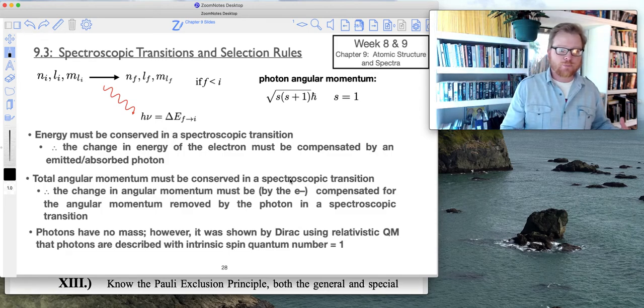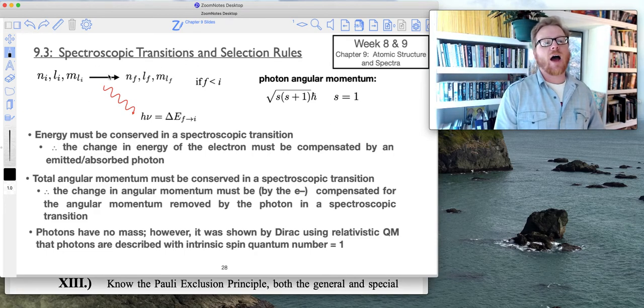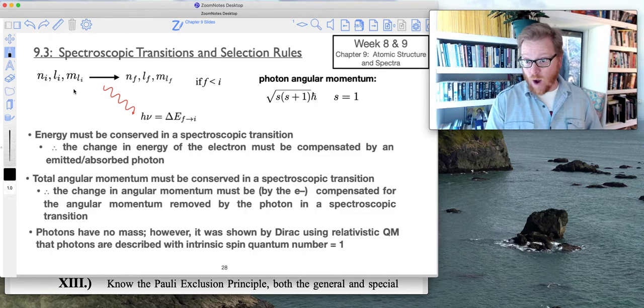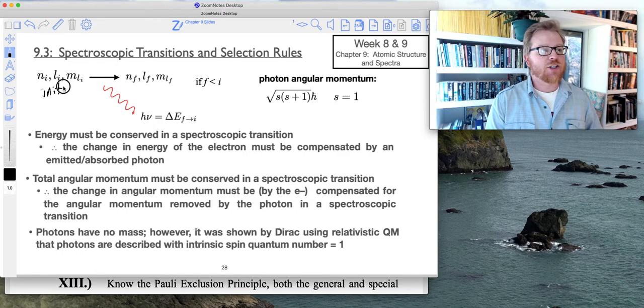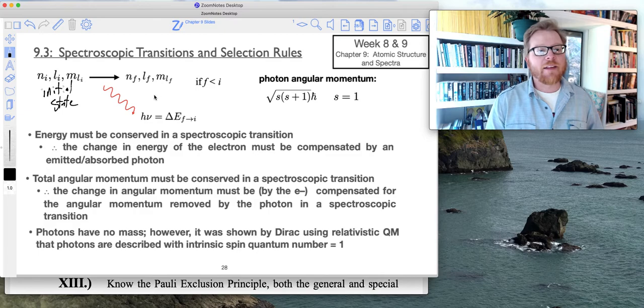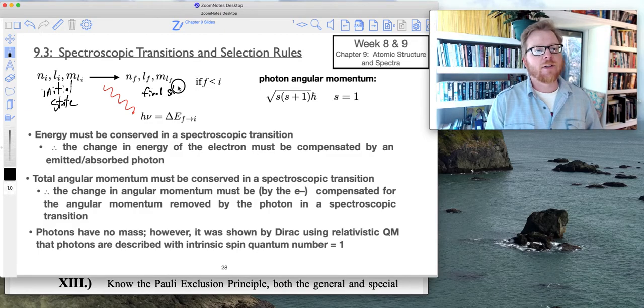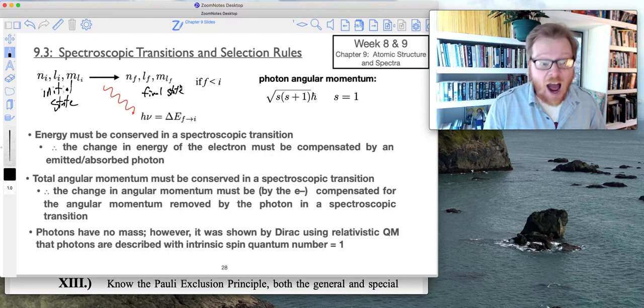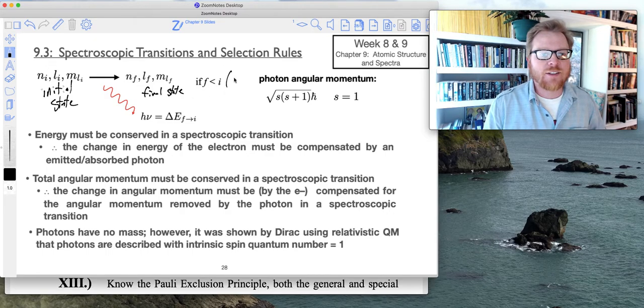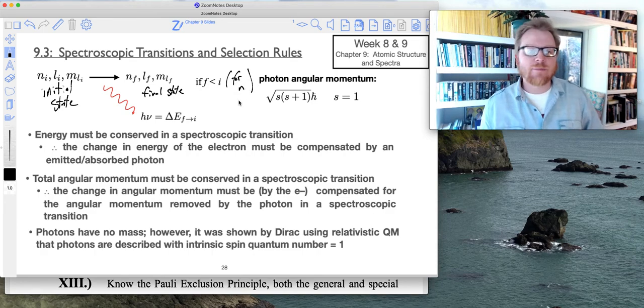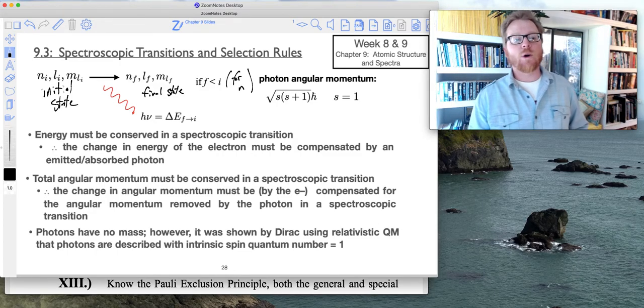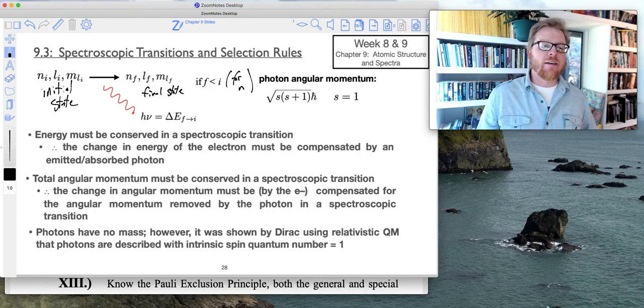We will define a spectroscopic transition as some set of initial quantum numbers that describes an initial state n_I, l_I, m_I, and this transitions to some final state n_F, l_F, m_F. If these quantum numbers F is less than I, particularly for n, then light will be emitted. If I is greater than F for n, then light will be required to be absorbed for that transition to happen.